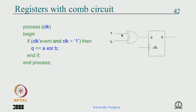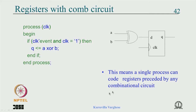This shows that you could write a single process for a flip-flop with some combinational logic preceding it. Under clock'event and clock = '1', you write q gets some combinational expression — that combinational circuit will be placed before the flip-flop. It need not be a single bit; it can be a row of registers with a much more complex circuit, all coded in a single process.